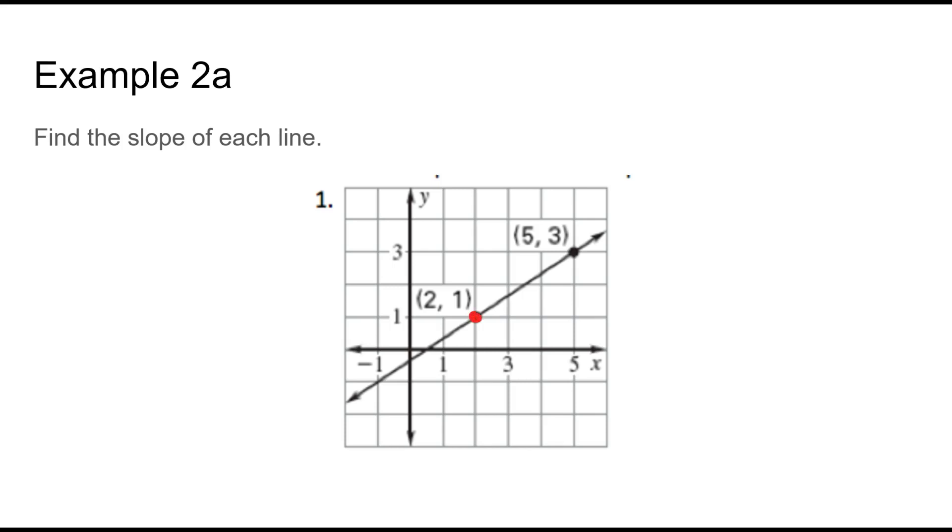To find the slope of the line notice that they already have two points on here. I'm always starting at that leftmost point. Let's see how can we get to that next point. Do we need to go up or do we need to go down? In this case we need to go up 1, 2, so the rise is a positive 2. Then from this point do we need to go left or do we need to go right? To the right 1, 2, 3, the run is a positive 3. We always use the letter M for slope. Rise 2 over 3. We cannot simplify that anymore so that is the slope of the line.